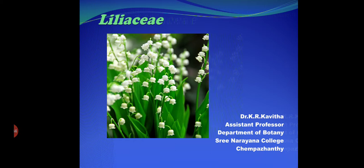Today we will study the family Liliaceae, which is the first family coming under monocotyledons. When studying Bentham and Hooker's classification, monocotyledons come under the third class. The first class is dicotyledons, the second class is Gymnospermia, and the third class is monocotyledons. According to Bentham and Hooker's classification, this third class is divided into seven series.